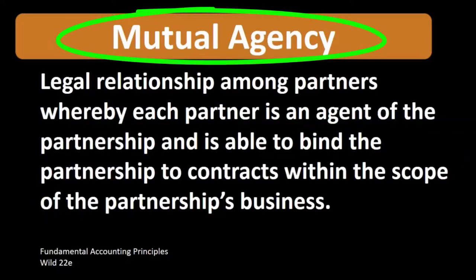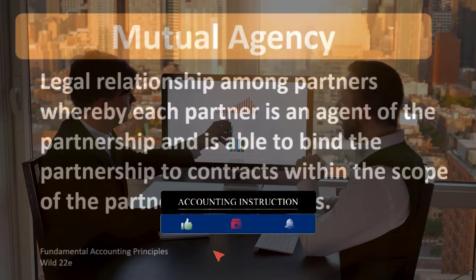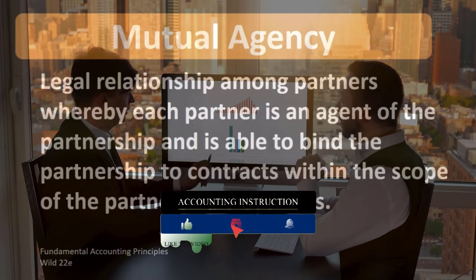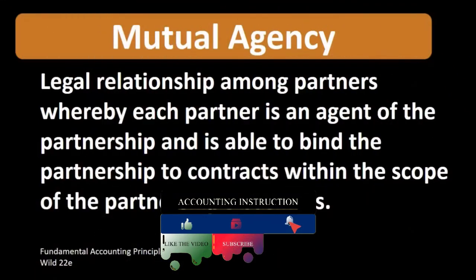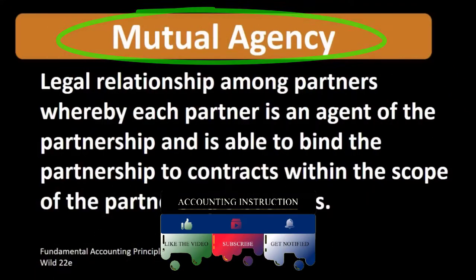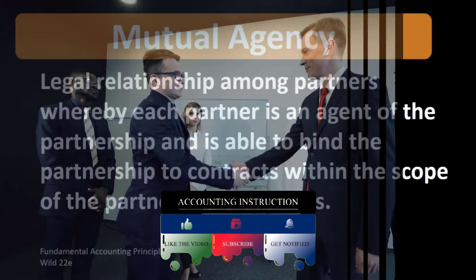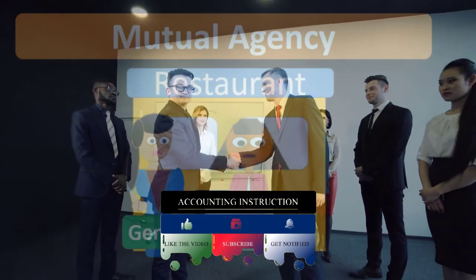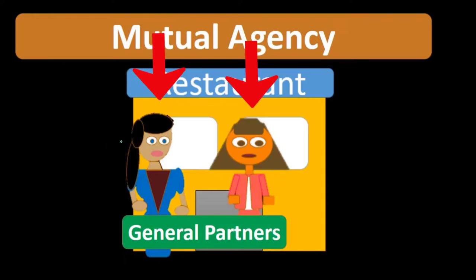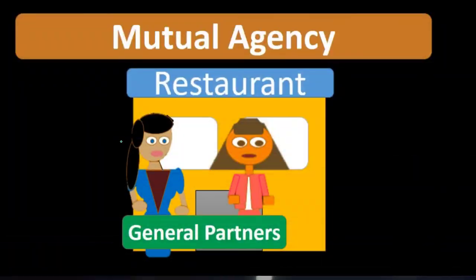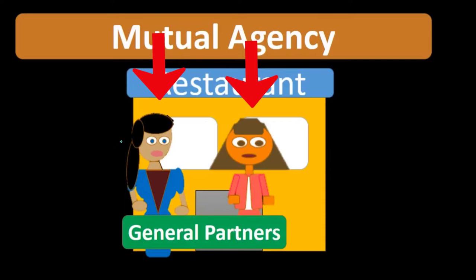When thinking about mutual agency, we consider it within the context of a partnership — the partnership being the business, distinct from the individual partners. Each agent has the ability to make decisions about contracts related to the partnership. If we have two partners who have come together to form a partnership, we think of that partnership as a separate entity.